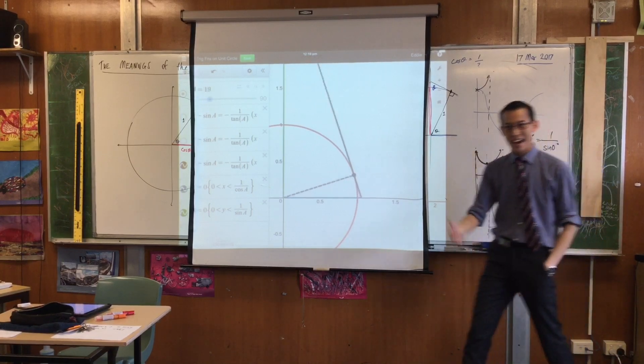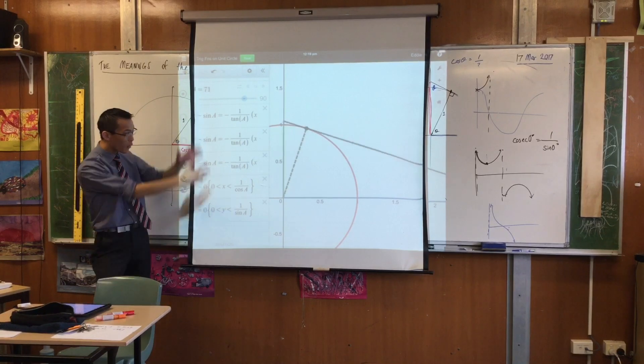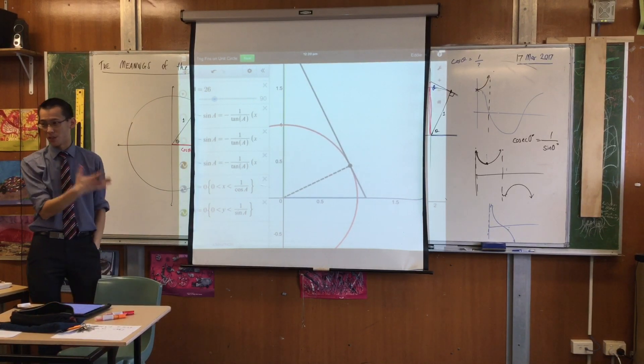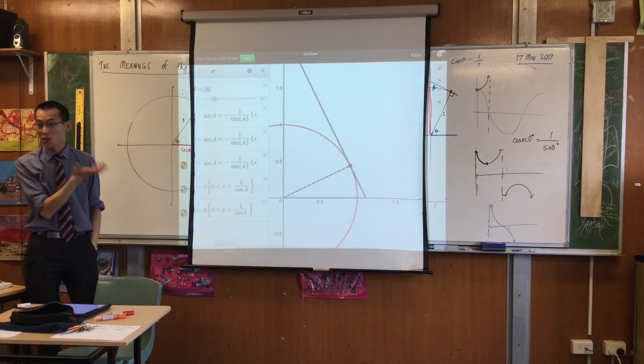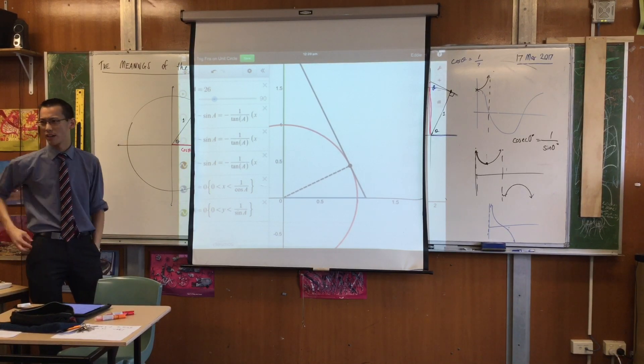So. Now you know why sine is called sine. Why cosine is called cosine. Why it all fits together. It's because of what's happening on the unit circle. That's why the unit circle is so much more of a powerful way of thinking about things than just the simple right angle. Very good. Thank you. Until next time.